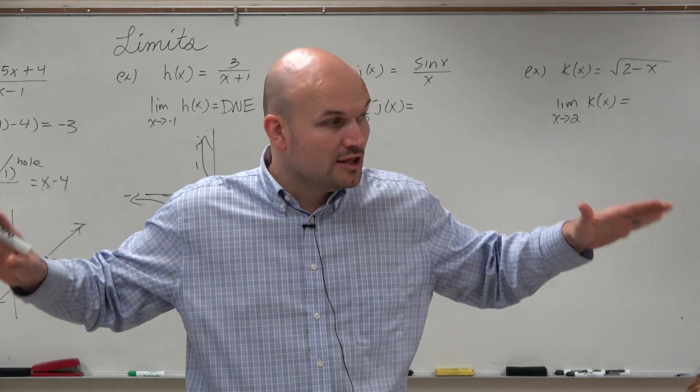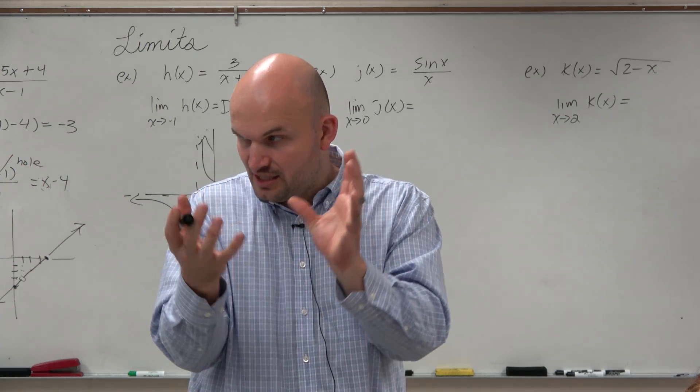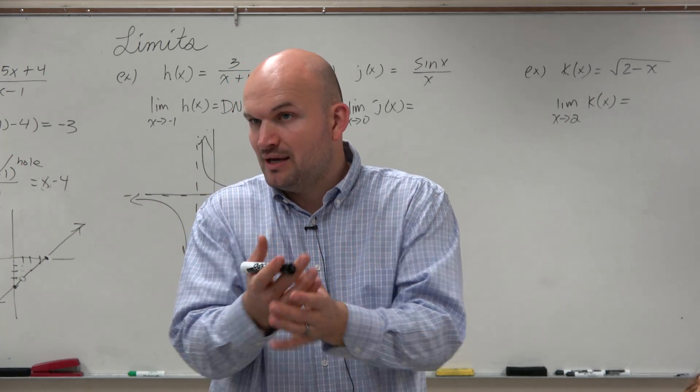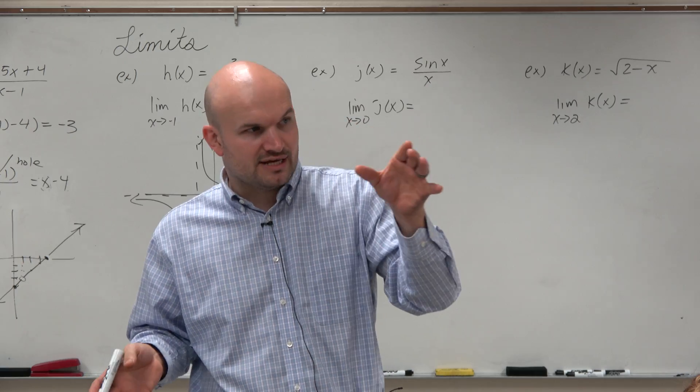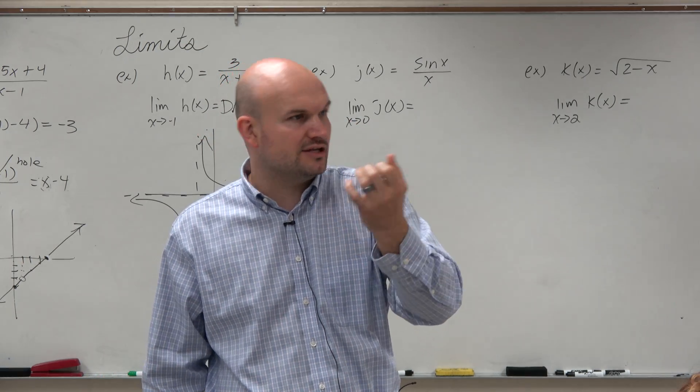Now, remember, asymptotes, the graph approaches. So if you see the graph approaching a value, then you know it's an asymptote. And if it looks like the graph covers it, but you know that value is undefined, then you know it's a hole, right?